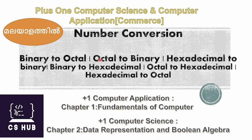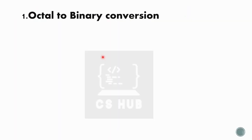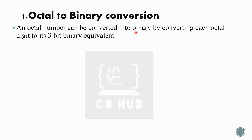Now we look at binary, octal, and hex — these 3 number systems and their conversions. We have to look at binary to octal, octal to binary, hex to binary, binary to hex, octal to hex, and hex to octal. An octal number can be converted into a binary number by converting each octal digit to its 3-bit binary equivalent.